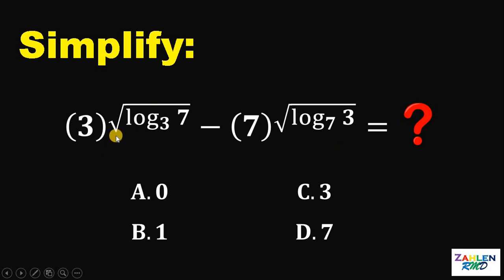Simplify: 3 raised to square root of logarithm of 7 to the base of 3 minus 7 raised to square root of logarithm of 3 to the base of 7.